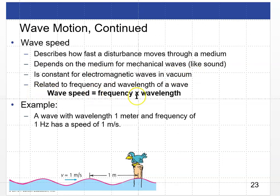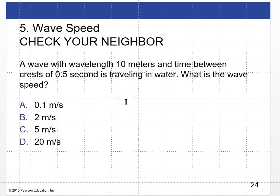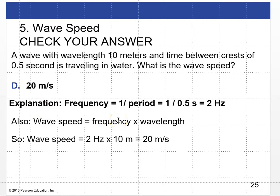Wave speed is related to frequency and wavelength: wave speed equals frequency times wavelength, or V = fλ. A wave with a wavelength of 1 meter and frequency of 1 hertz has a speed of 1 meter per second. For a wave with a wavelength of 10 meters and a time between crests of 0.5 seconds: frequency is 1/0.5 = 2 Hz, so wave speed is 2 Hz × 10 m = 20 meters per second.